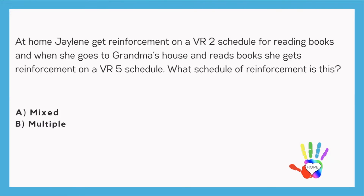At home, Jaylene got reinforcement on a VR2 schedule for reading books, and when she goes to grandma's house and reads books, she gets reinforcement on a VR5 schedule. This is going to be a multiple schedule of reinforcement because there's a clear SD for each schedule. Home is the SD signifying the VR2 schedule, and grandma's house is the SD indicating the VR5 schedule of reinforcement.